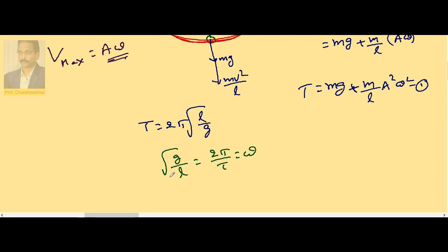In the place of omega you can substitute root over G by L. So this equation becomes mg plus M by L times, which is mg plus mg into A square by L square.